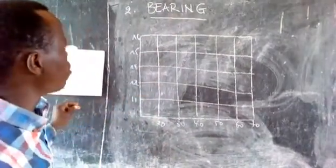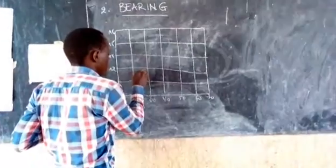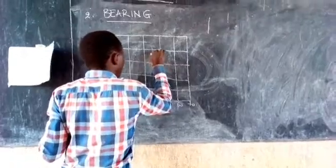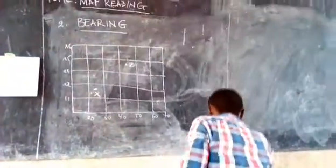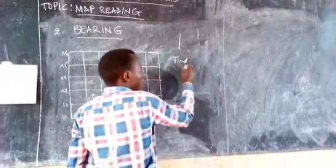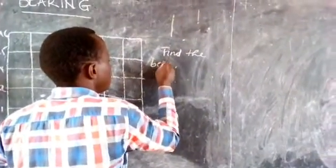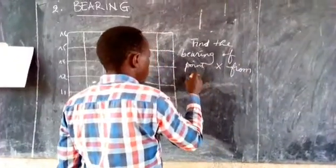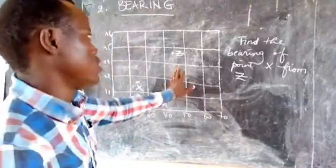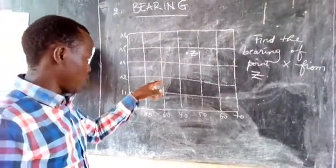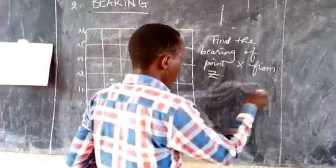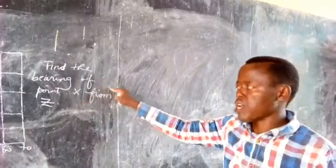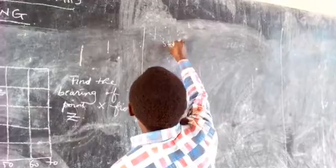So we are going to find the bearing. We have two points — point X and point Z — and the question asks you: find the bearing of point X from Z. We are going to see how we can find that bearing by following a summary of steps.